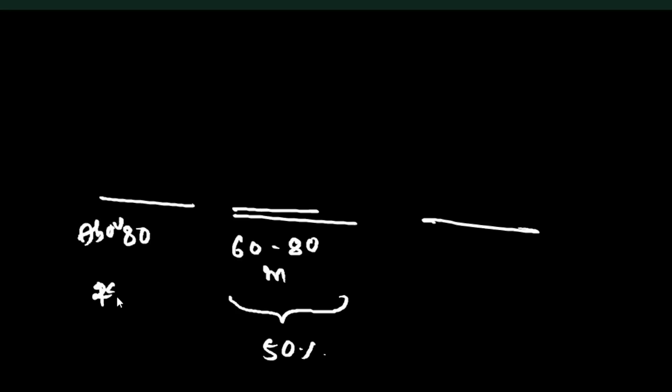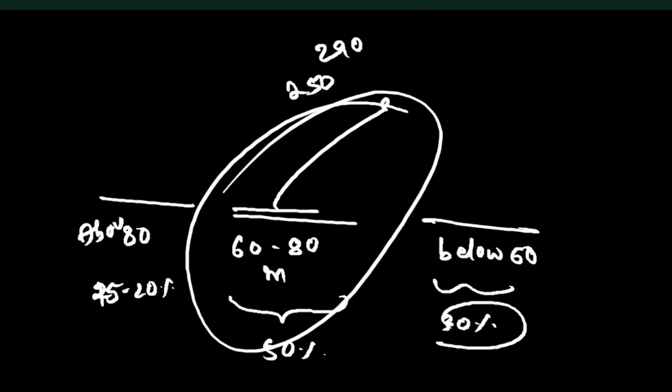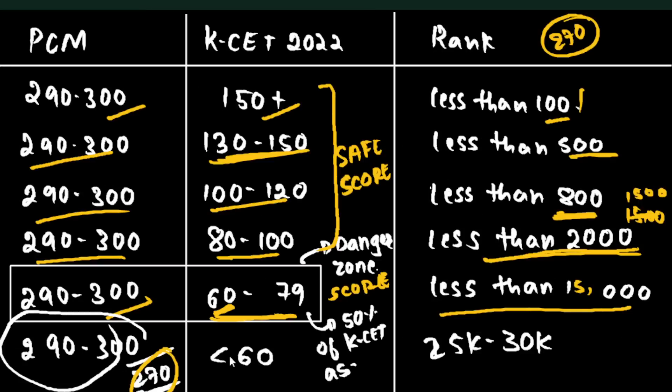At least 50% of K-CET aspirants score in the 60-80 marks range in boards. About 15-20% score below 60. Around 30% are in this criteria. The 60-80 board marks range is a danger zone. If you're getting less than 60 total in boards and less than 250 in K-CET, there will be heavy competition. You may still get a rank up to 50,000.